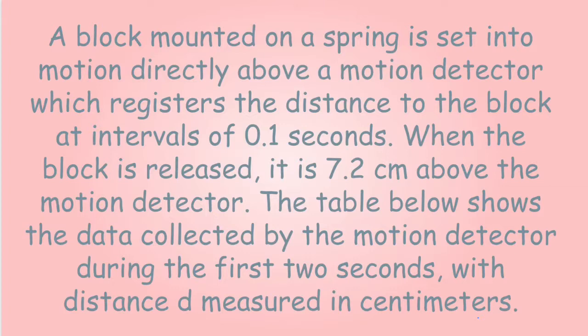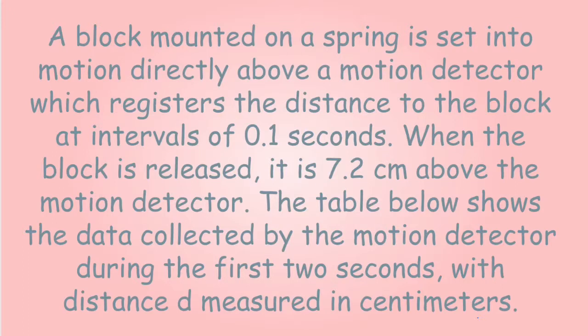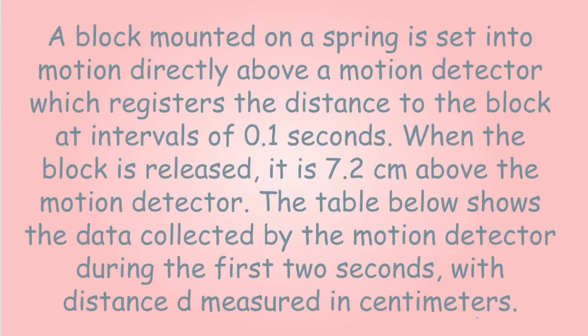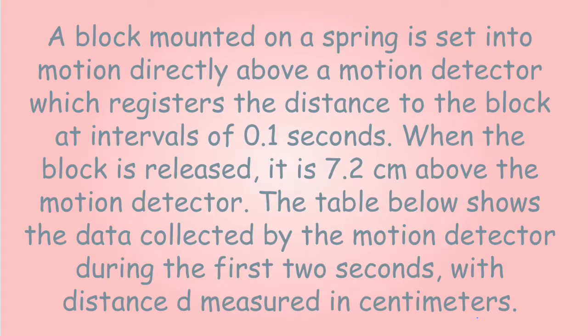A block mounted on a spring is set into motion directly above a motion detector, which registers the distance to the block at intervals of 0.1 seconds. When the block is released, it is 7.2 centimeters above the motion detector. The table below shows the data collected by the motion detector during the first two seconds, with distance d measured in centimeters.